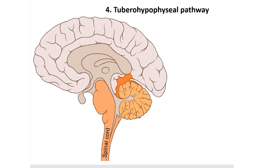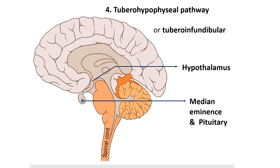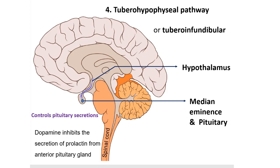The last pathway is the tubero-hypophysial pathway or tubero-infandibular pathway. This extends from hypothalamus to the median eminence and pituitary. It controls pituitary secretions. The dopamine released in this pathway inhibits secretion of prolactin from anterior pituitary glands. Dopaminergic agonists like bromocriptine also decrease release of prolactin and are used in hyperprolactinemia.